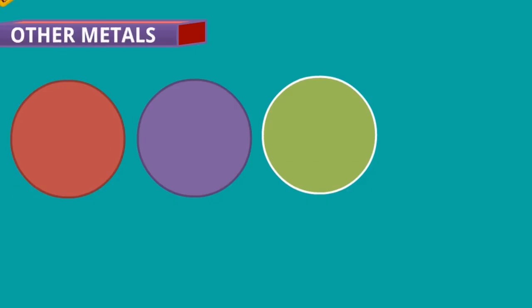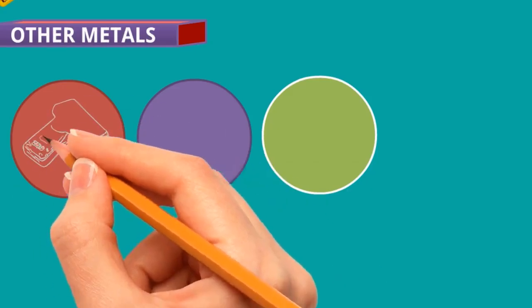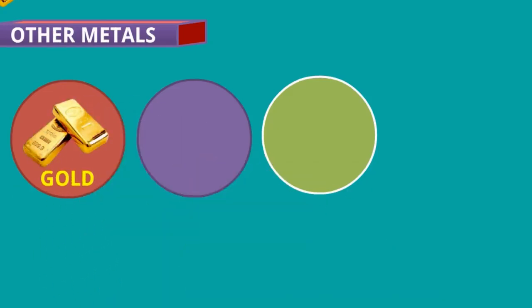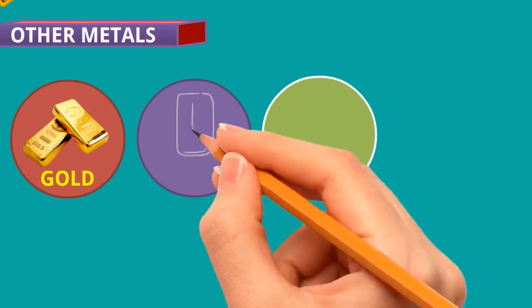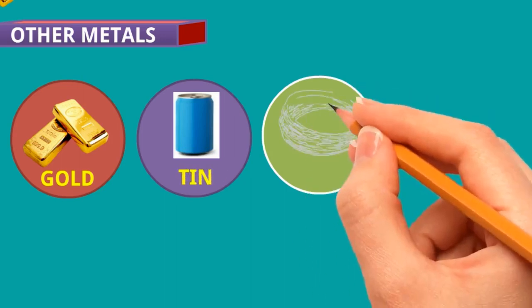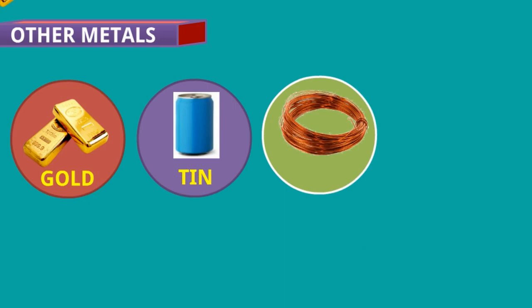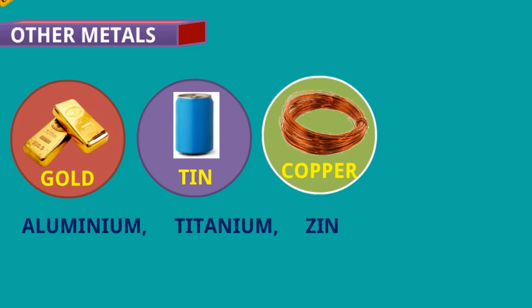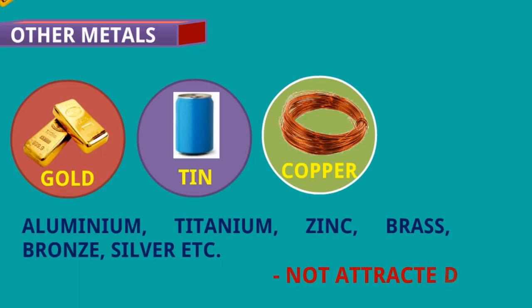And other metals which we have already seen like gold which is not attracted by magnet, tin this is also not attracted by magnet, or copper this is also not attracted by magnet. Other metals like aluminium, titanium, zinc, brass, bronze, silver, these types of metals are not attracted by magnets.